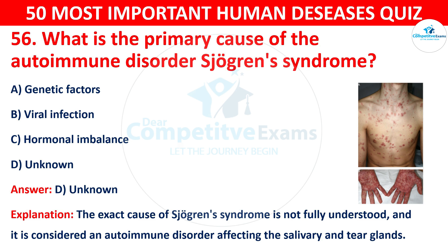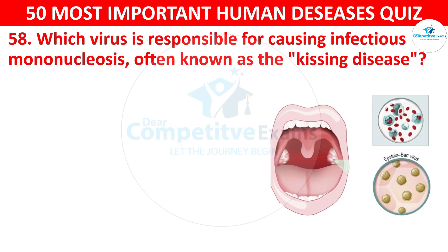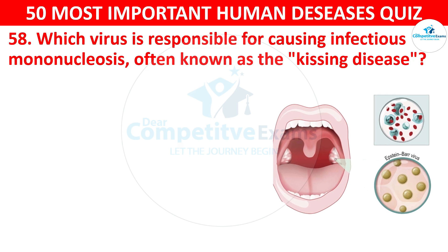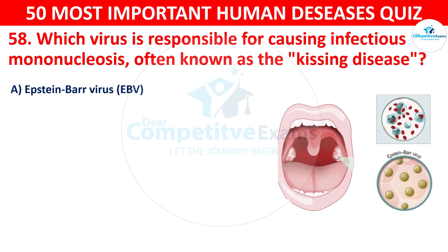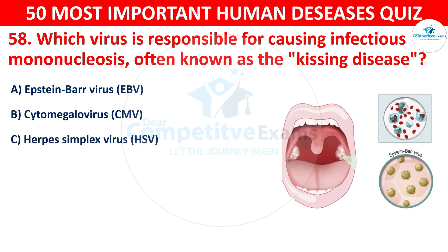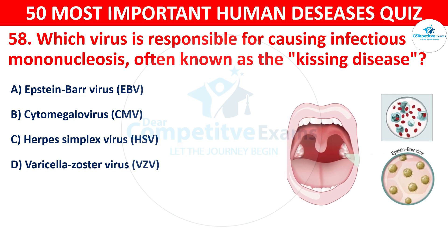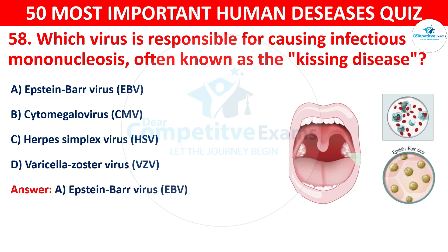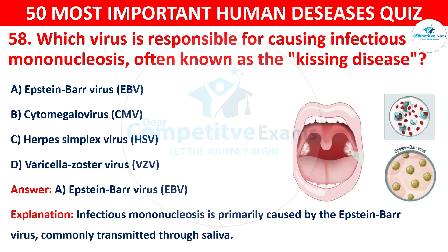Question 57: Which virus is responsible for causing infectious mononucleosis, often known as the kissing disease? The correct answer is A — Epstein-Barr virus. Epstein-Barr virus (EBV) is responsible for causing infectious mononucleosis.